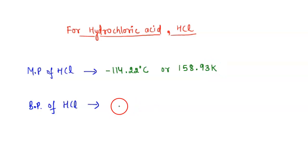Now let's talk about the boiling point of HCl. It is minus 85.05 degrees Celsius or in terms of Kelvin, it will be 188.10 Kelvin.